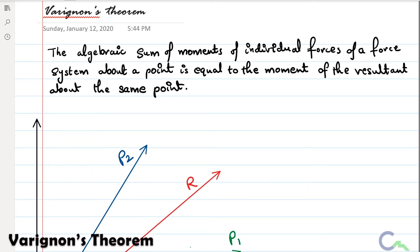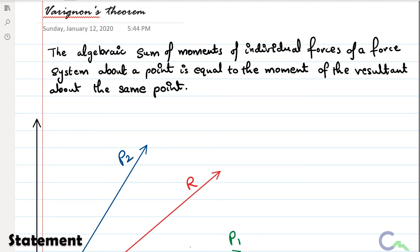Hello everyone. In this video tutorial I am going to explain Varignon's theorem. The statement is: the algebraic sum of moments of individual forces of a force system about a point is equal to the moment of the resultant about the same point. If a number of forces are acting in a system, the sum of moments of individual forces equals the moment of the resultant of that system.